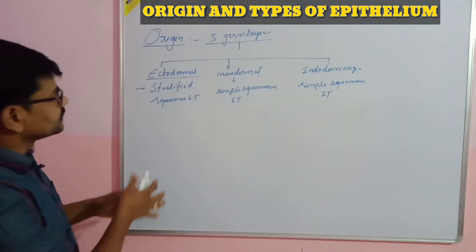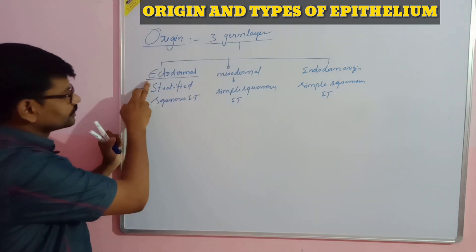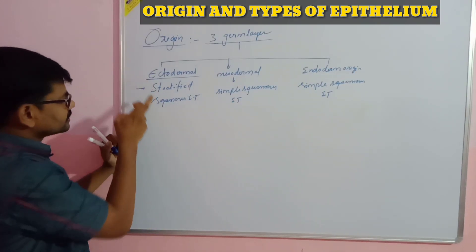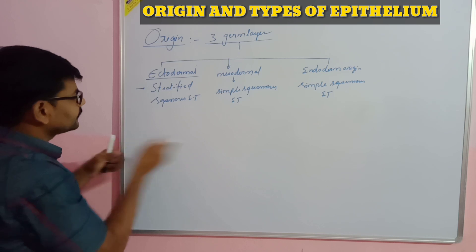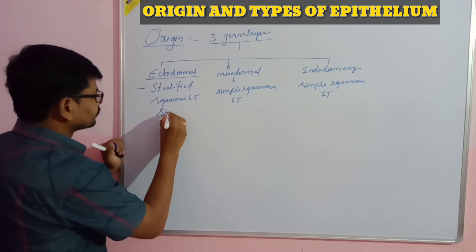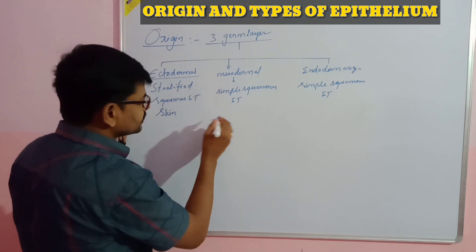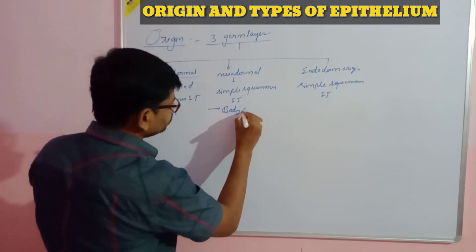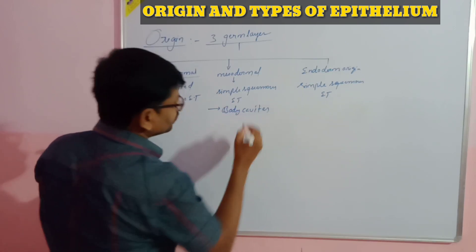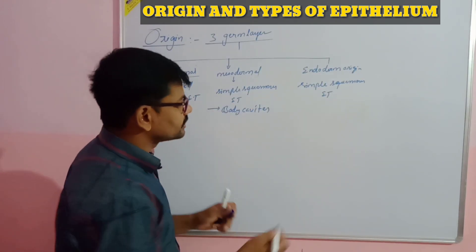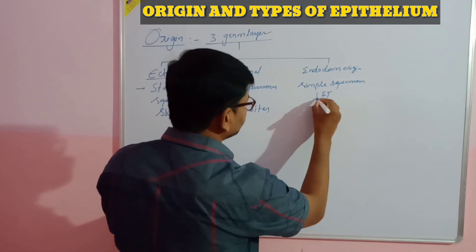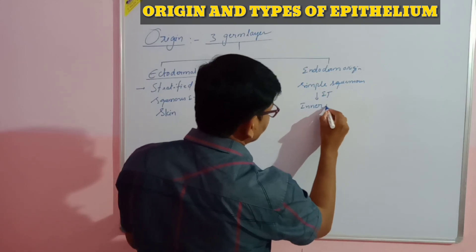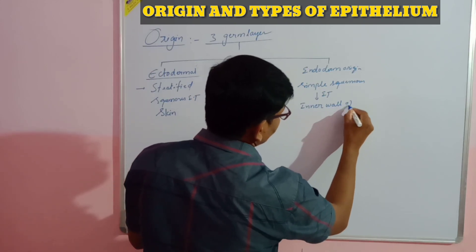The epithelial tissues originate from three germ layers: ectodermal origin, mesodermal origin, and endodermal origin. Ectodermal origin takes place mostly in skin epithelium. Mesodermal origin occurs in body cavities. Endodermal origin occurs mostly in the inner wall of the gut.